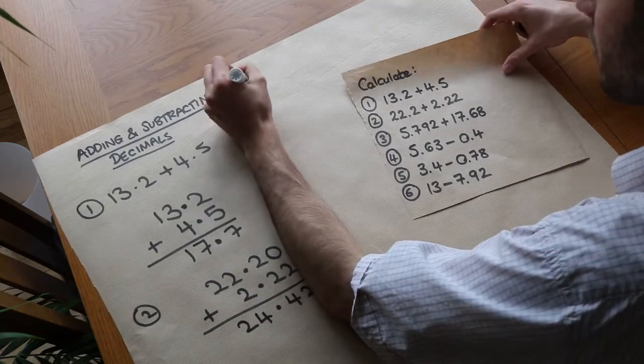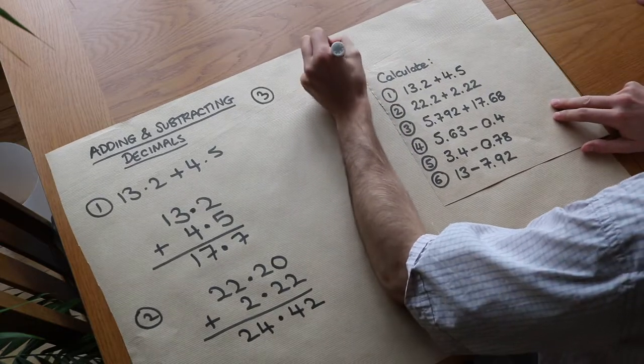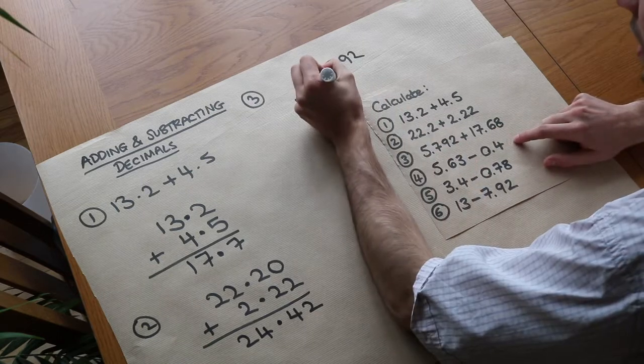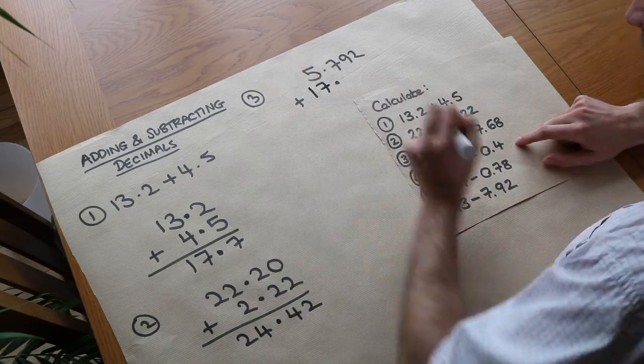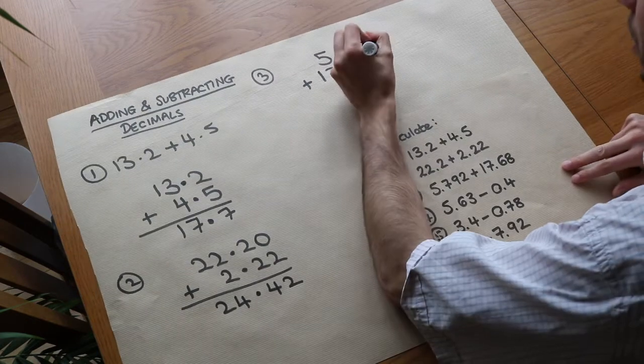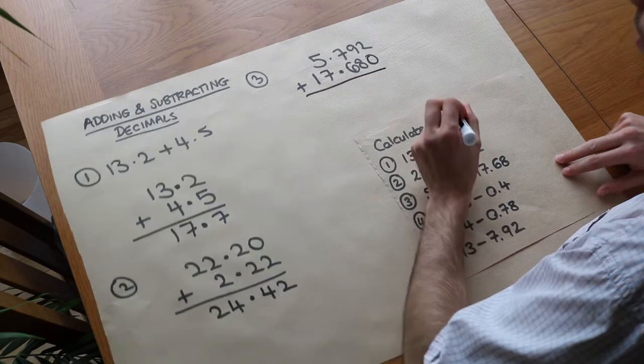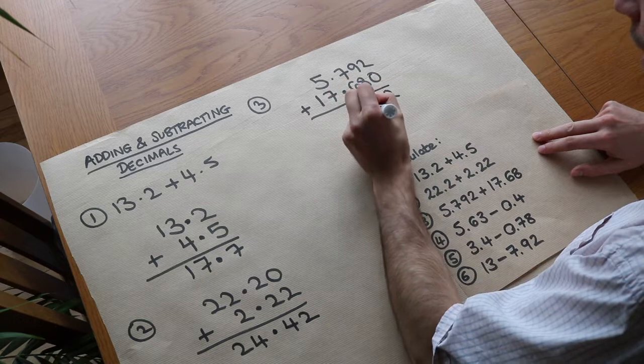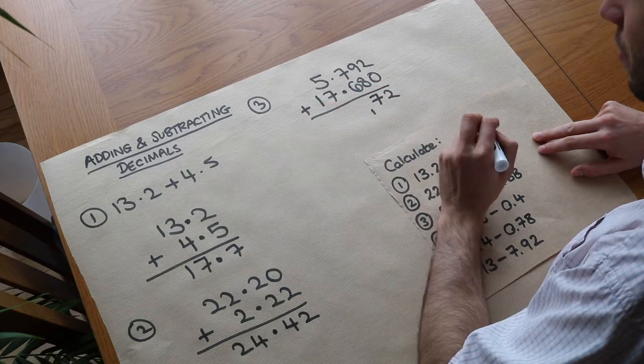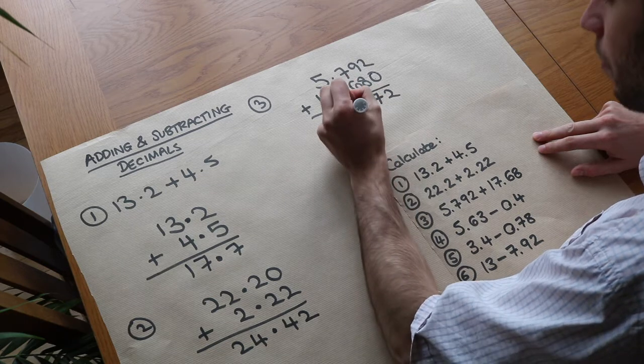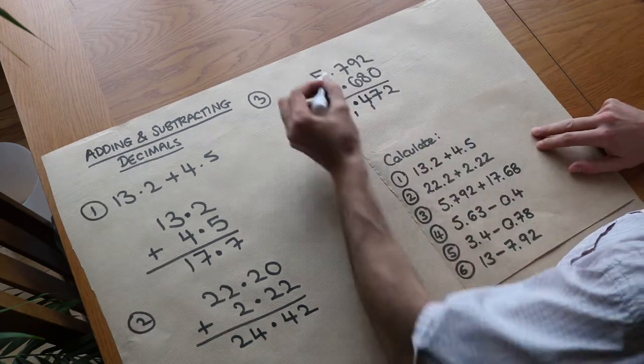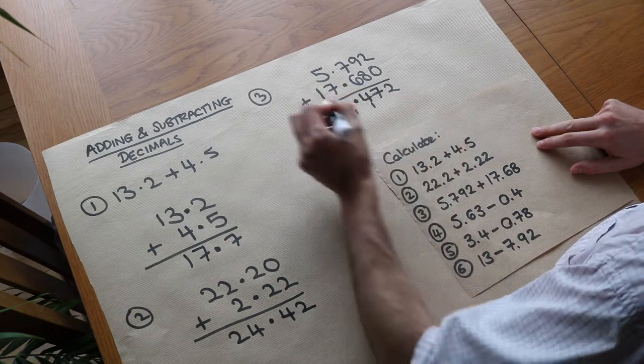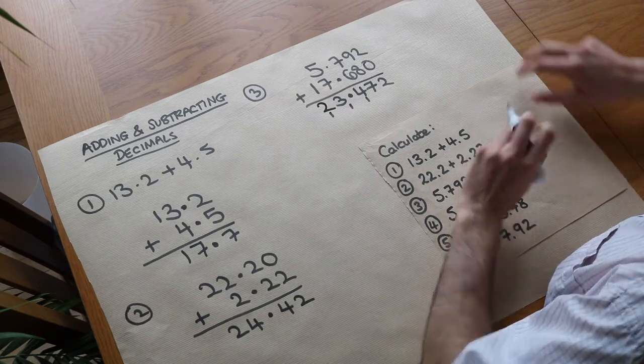One last addition one, and then we'll go into subtraction. We've got 5.792 plus 17.68, so put the decimal point in the same place. We've got 17 like that, and then 6, 8, and we could always put a 0 there if we like. So we do the same thing: that is just 2. 9 plus 8 is 17, so put a 7 there, carry the 1. 7 plus 6 equals 13, plus the 1 is 14, carry the 1, put the decimal point in the same place. 5 plus 7 is 12, plus the 1 is 13, carry the 1, and 1 plus that carried 1 is 2. So we get 23.472.